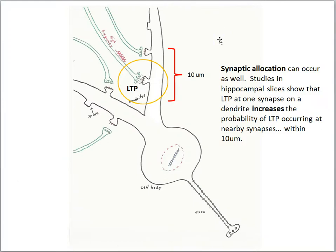Now we've been discussing the allocation of neurons, but there is a phenomenon called synaptic allocation as well, and this can occur at nearby synapses. Studies in hippocampus slices show that LTP at one synapse on a dendrite increases the probability of LTP occurring at nearby synapses within 10 micrometers or so.